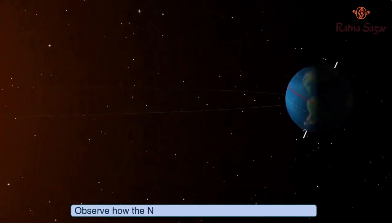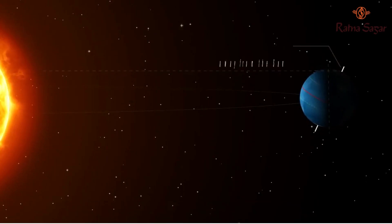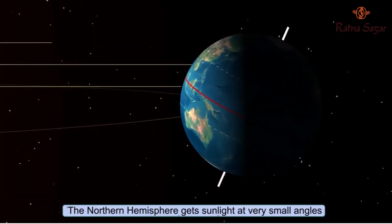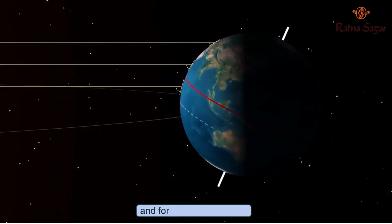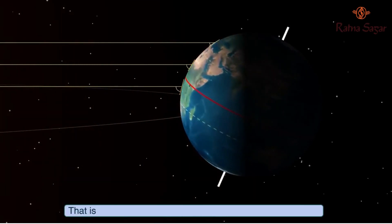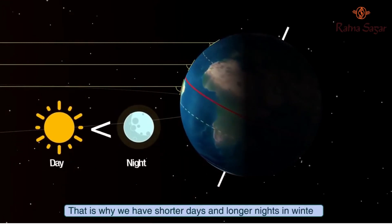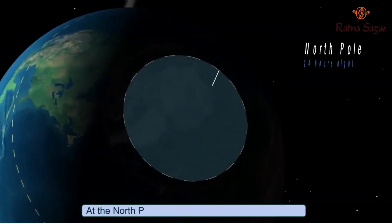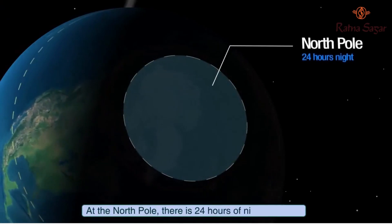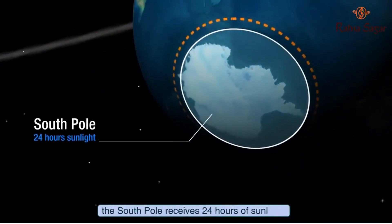Observe how the Northern Pole is tipping away from the Sun. The Northern Hemisphere gets sunlight at very small angles and for fewer hours of time. That is why we have shorter days and longer nights in winter. At the North Pole, there is 24 hours of night whereas the South Pole receives 24 hours of sunlight.